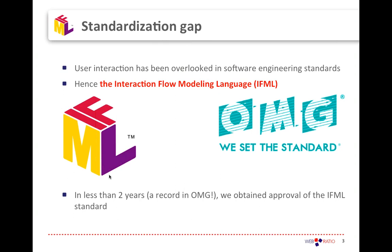The second step is to establish a common language for specifying these kinds of interactions. We don't want a proprietary language used only by one company or one tool — we want a standard language understood and shared worldwide by any tool vendor and any software designer. That's why we proposed IFML to the OMG, the Object Management Group, an international organization based in the United States that standardizes mainly software design languages, including UML, and is now the promoter of BPMN.